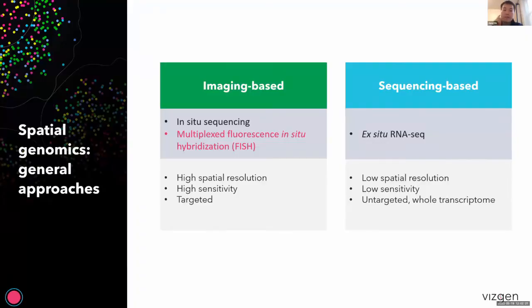In general, the field of spatial genomics has two major technology camps. First is imaging-based, second is sequencing-based. Sequencing-based technologies often barcode nucleic acids such as RNAs in situ first, and then the RNAs are released for ex situ RNA sequencing. These can achieve whole-transcriptome imaging but often suffer from lower spatial resolution and lower sensitivity. The imaging-based camp offers much higher resolution and high sensitivity, but is a more targeted approach. Two major categories exist: in situ sequencing and fluorescence in situ hybridization-based technology.